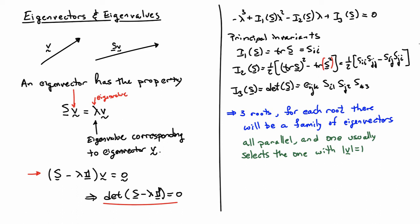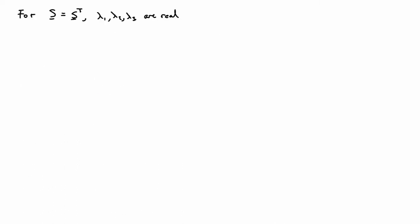So now this is the general setup for eigenvectors. We don't need the most general case or understand the most general case. The case that's really important to us is the case where the tensor s is symmetric. So for s being symmetric, you can prove, first of all, that the eigenvalues that you compute are actually real numbers.